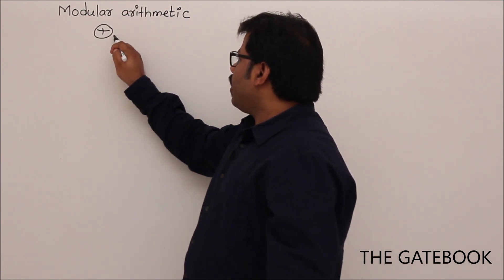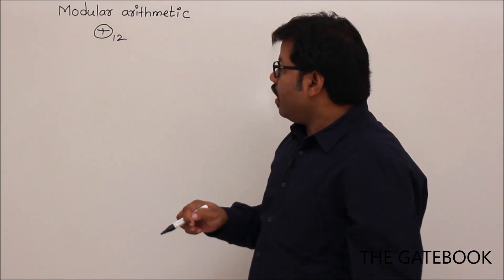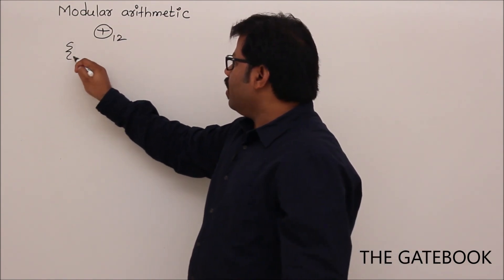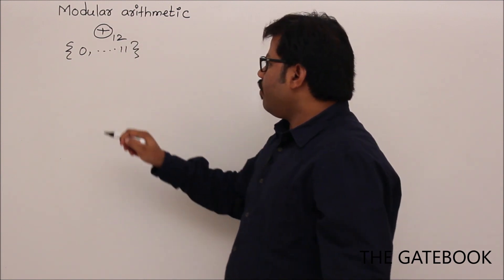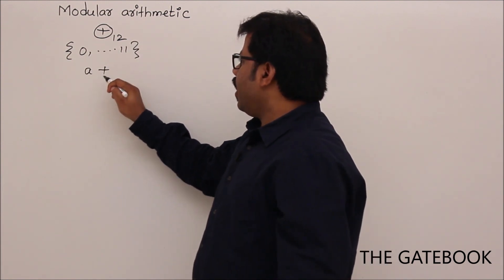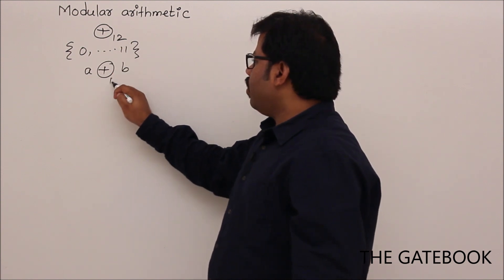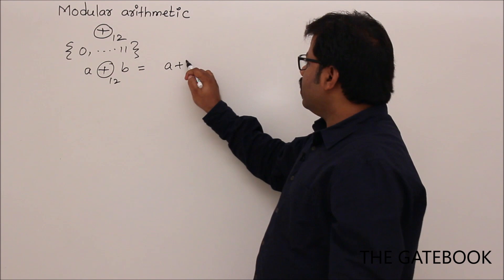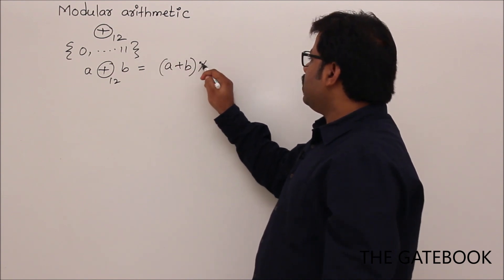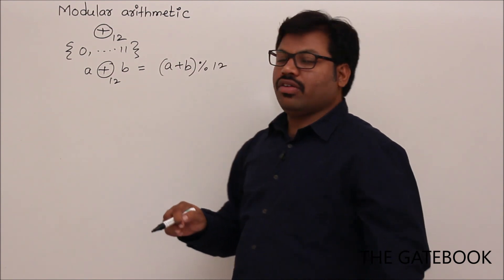Example, arithmetic modulo 12. Whenever we have that, the domain will be only from 0 to 11. So whenever we add two numbers like A, B, arithmetic modulo 12, if I apply, then the answer is A plus B, percentile 12. This is a way I can define arithmetic modulo 12.